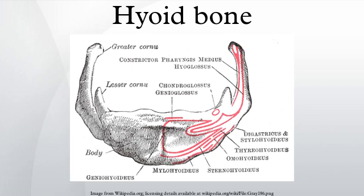The digastric muscle and stylohyoid muscle have small insertions in front of these near the junction of the body with the cornu. To the medial border the thyrohyoid membrane is attached, while the anterior half of the lateral border gives insertion to the thyrohyoid muscle. The greater cornua derive from the third pharyngeal arches.